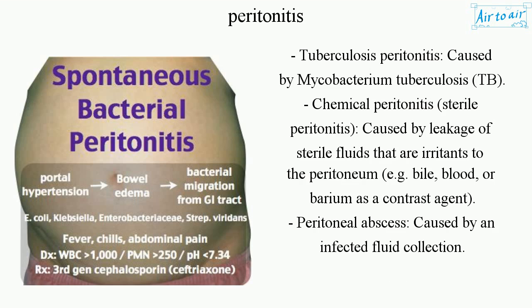Chemical peritonitis — sterile peritonitis caused by leakage of sterile fluids that are irritants to the peritoneum, e.g. bile, blood, or barium as a contrast agent. Peritoneal abscess is caused by an infected fluid collection.